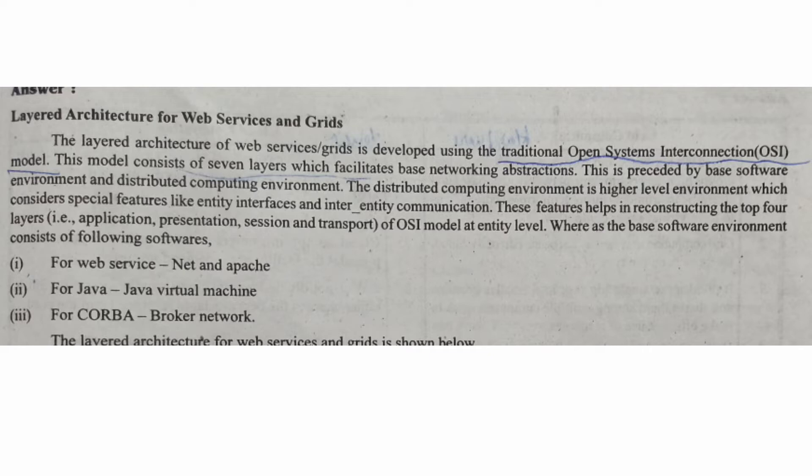OSI models are used as a layered architecture of web services. This is the traditional Open Systems Interconnection OSI model. In this model, we have 7 layers which facilitate base networking abstractions. This is supported by the base software environment and distributed computing environment. The distributed computing environment is a higher-level environment considering special features like entity interfaces and inter-entity communication. The OSI model forms the base with 5 lower levels.